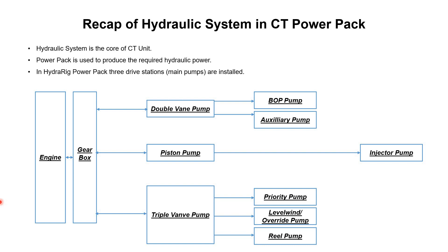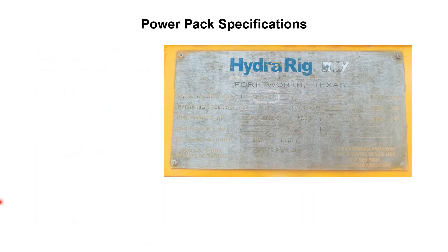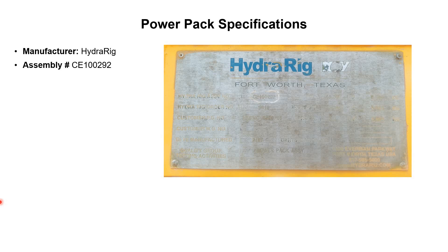In this particular tutorial we will discuss the BOP circuit. But first, let's see the specifications of the power pack we are using for explanation. The manufacturer is Hydraforce, the assembly number is CE100292, and its type is high pressure open loop — that is the power pack we are going to discuss.